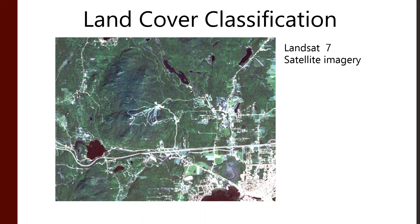When we get little snapshots like this one from Landsat 7, you can see some urban area in the lower right, some lakes, and then it gets a little greener and more rural toward the center left.